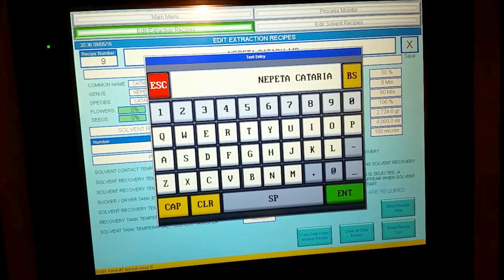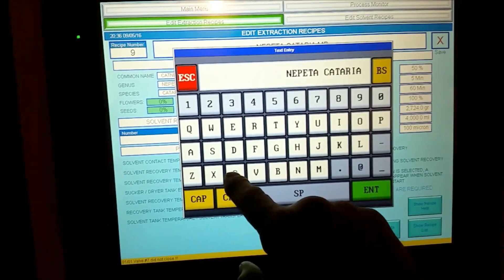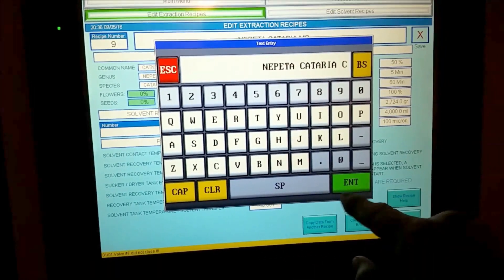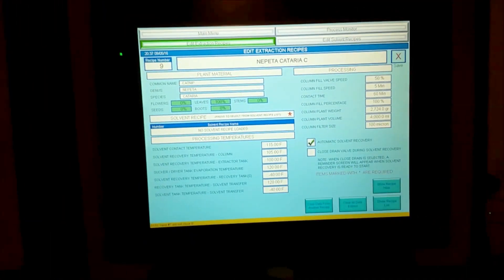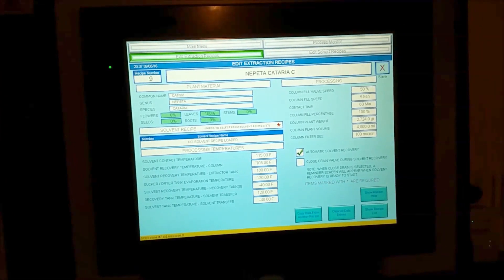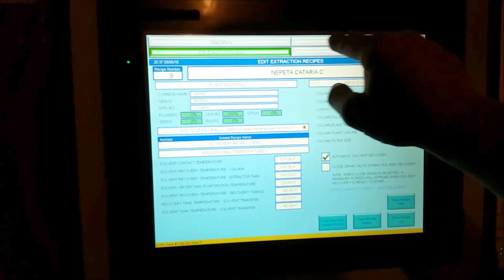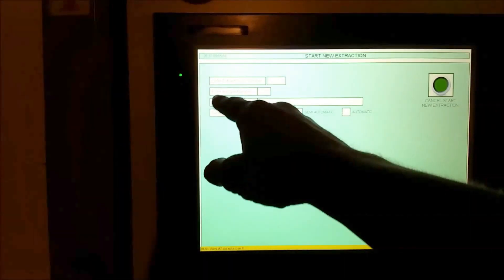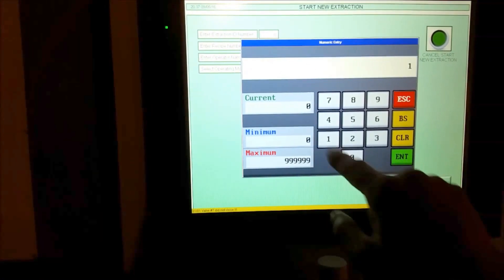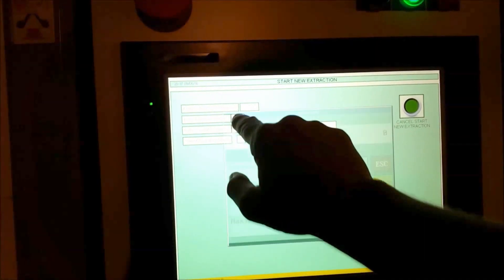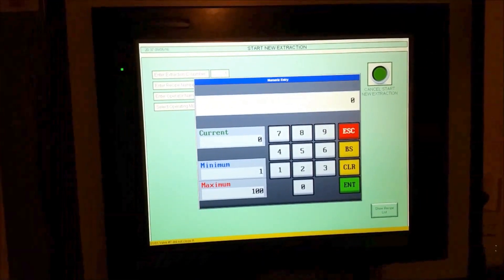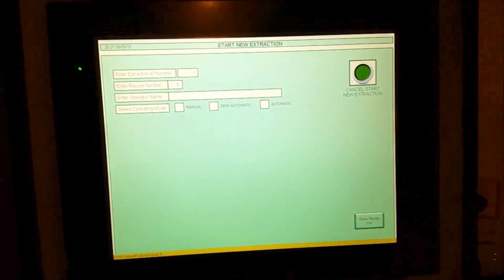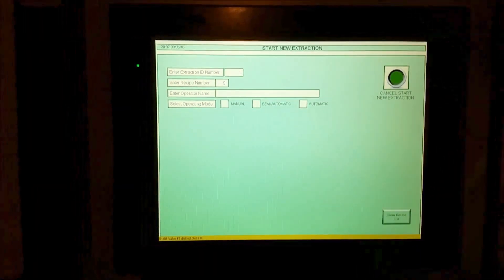This one is for something else, so we'll just call it C. Now I've got two recipes and it saved me a lot of time. Now when I go back to start a new extraction and it asks me for an extraction ID number, I can just give it a number one. When it asks me for my recipe number, I know that I want to choose number nine, and then that'll load that recipe for me.